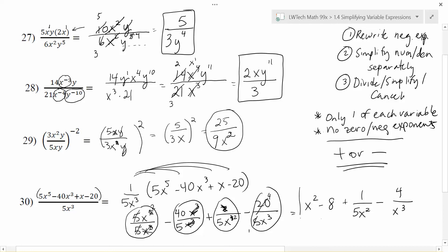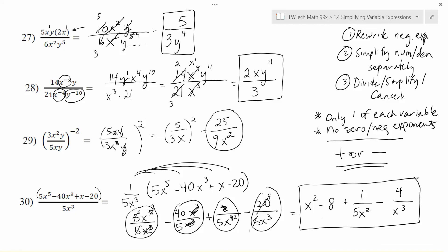So this is the best way to simplify that original expression. When you see pluses or minuses, that's your signal — danger, danger — you need to deal with each individual term as a separate group. This essentially turns into four little simplifying problems, and then you combine those results to reach the final most simplified solution.